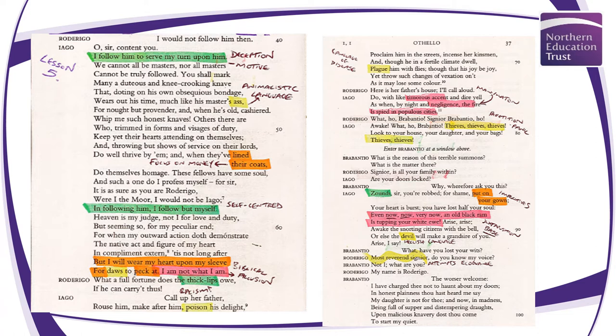'These fellows have some soul, and such a one do I profess myself.' He says, 'Were I the Moor, I would not be Iago.' Here we get a flipping of identity — something he does a lot, confusing people about who they truly are. And then: 'In following him, I follow but myself.' Very closely linked to that earlier phrase about his self-centeredness.